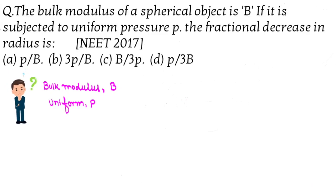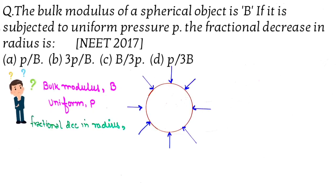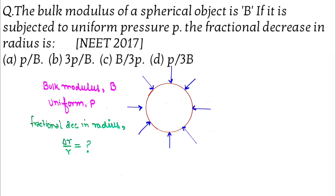We have to find the fractional decrease in the radius, that is delta r by r. Suppose this is a sphere with pressure applied on it. You know the formula for bulk modulus is pressure by volumetric strain, that is B equals P divided by delta V by V, where the minus sign indicates the decrease in volume when pressure is applied.